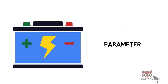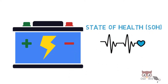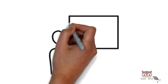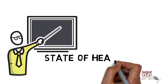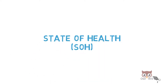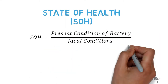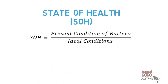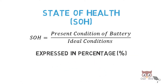One of the battery parameters which indicates the condition of the battery is State of Health, SOH. State of Health (SOH) is the ratio of the present conditions of a battery to its ideal conditions, expressed in percentage.